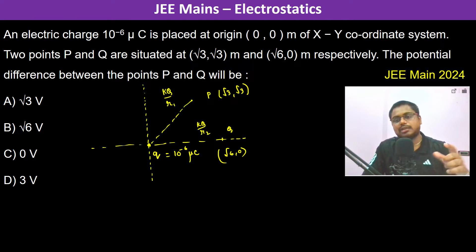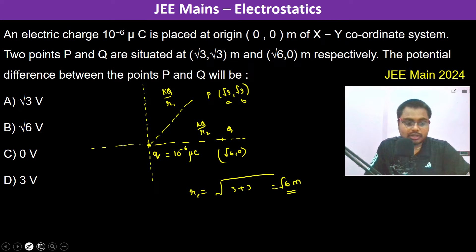Where r1 and r2 are the distance from the origin. Now if we take r1, r1 is going to be root over a square plus b square, so therefore 3 plus 3 which is root 6 meters. Interestingly both of them are situated at root 6 meters so therefore the potential is going to be the same.